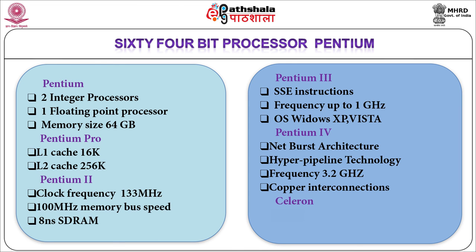Celeron is a low-end Pentium available at a cheaper rate. It does not have L2 cache, its L1 cache is smaller than Pentium, instruction execution speed is less, and in PCIe-based Celeron processors, multiprocessing is disabled. Xeon has L1 cache increased to 32 KB with L2 cache sizes varying from 512 KB to 2 MB. There can be 4 Xeons in the same system. Level 3 cache is added and Level 2 cache size is increased. Xeon is used as workstations and servers.